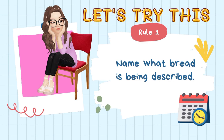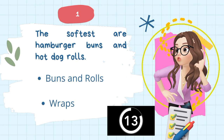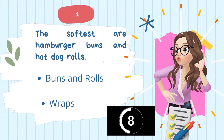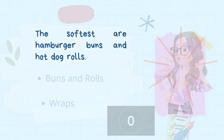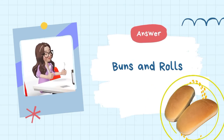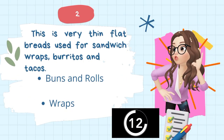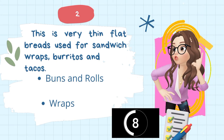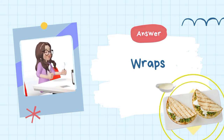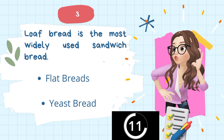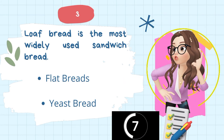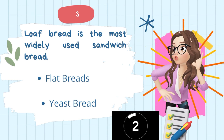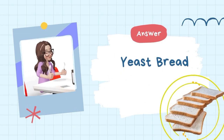Let's try this — name what bread is being described. 1. The softest are hamburger buns and hot dog rolls. Answer: Buns and rolls. 2. These are very thin flat breads used for sandwich wraps, burritos, and tacos. Answer: Wraps. 3. Loaf bread is the most widely used sandwich bread. Answer: Yeast bread.